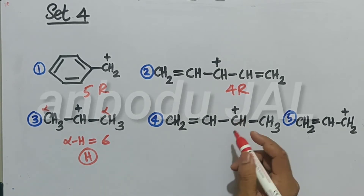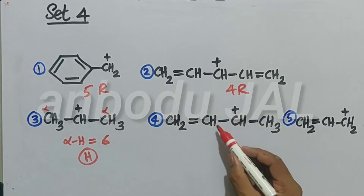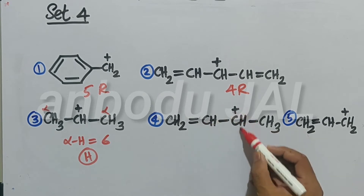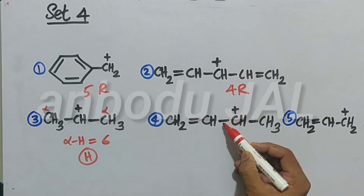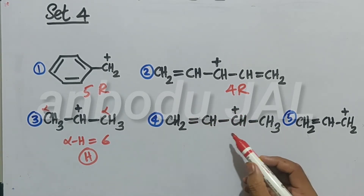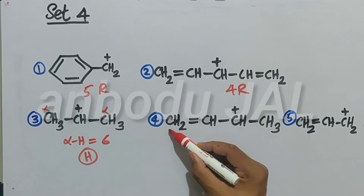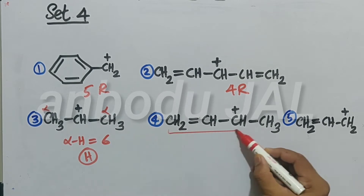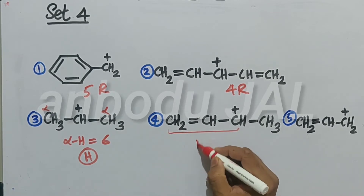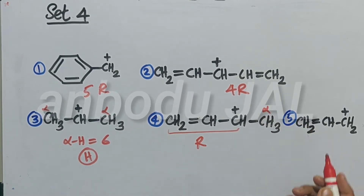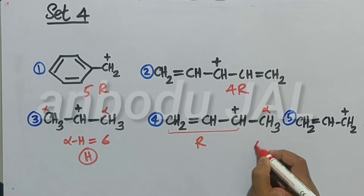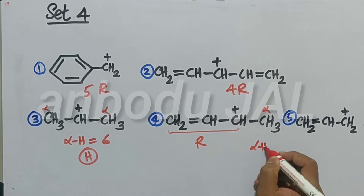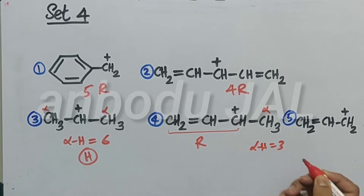In this case, resonance in this part — plus, single, double — conjugation. So in this part there is resonance, and this is an alpha hydrogen. Therefore, alpha hydrogen equals three, and hyperconjugation is also present.